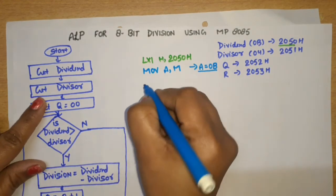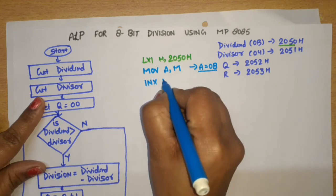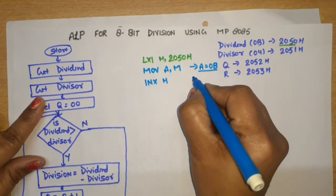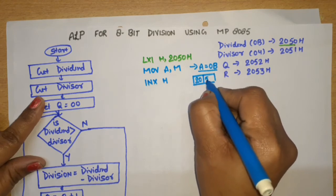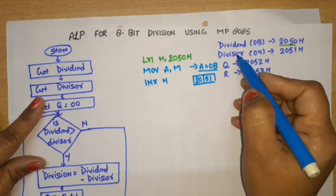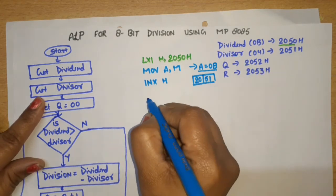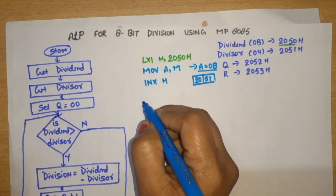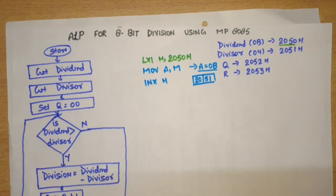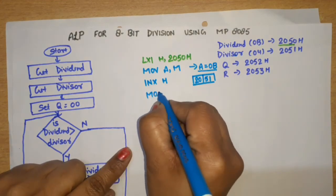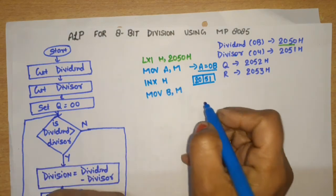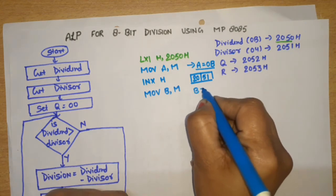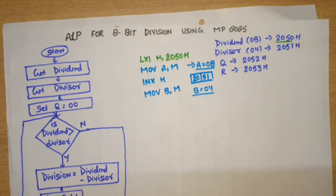Now we need the divisor. Write INX H — the HL pair content becomes 2051H. Then write MOV B, M — the divisor value from memory location 2051H is moved into register B. So B becomes 04, which is the divisor.